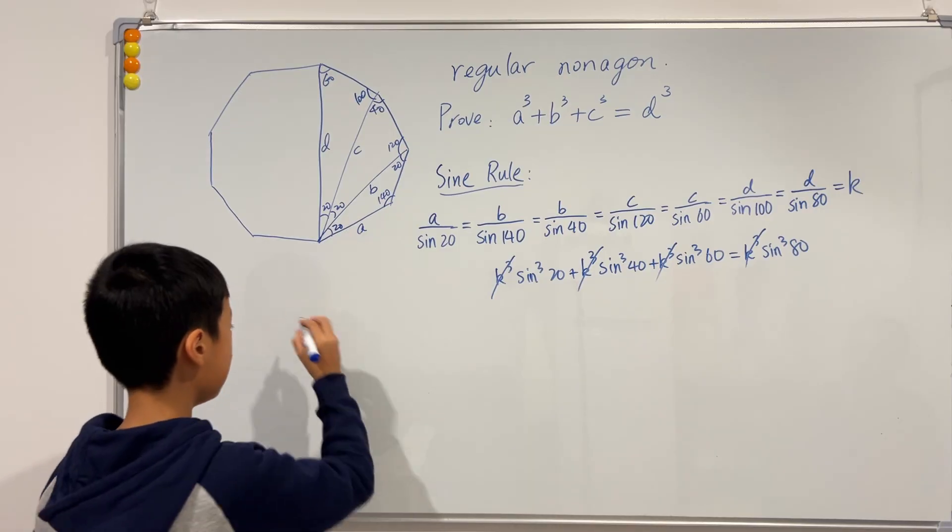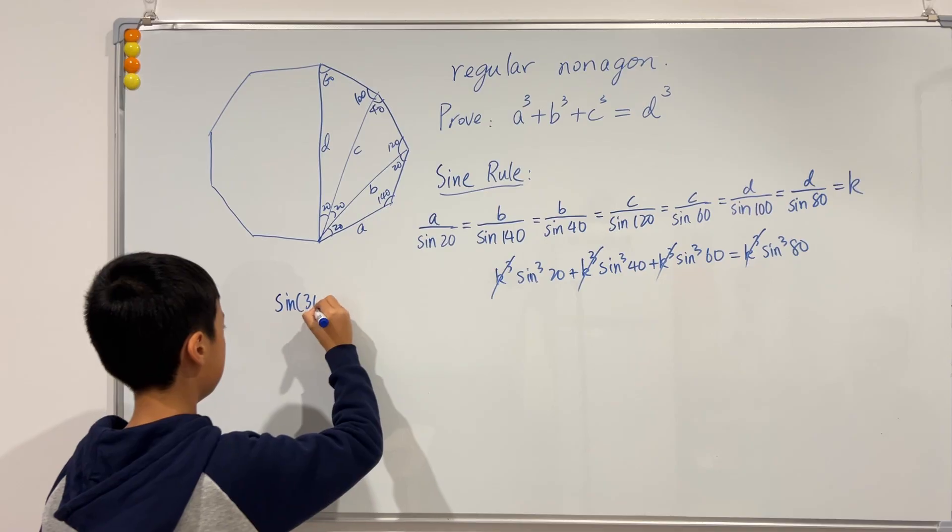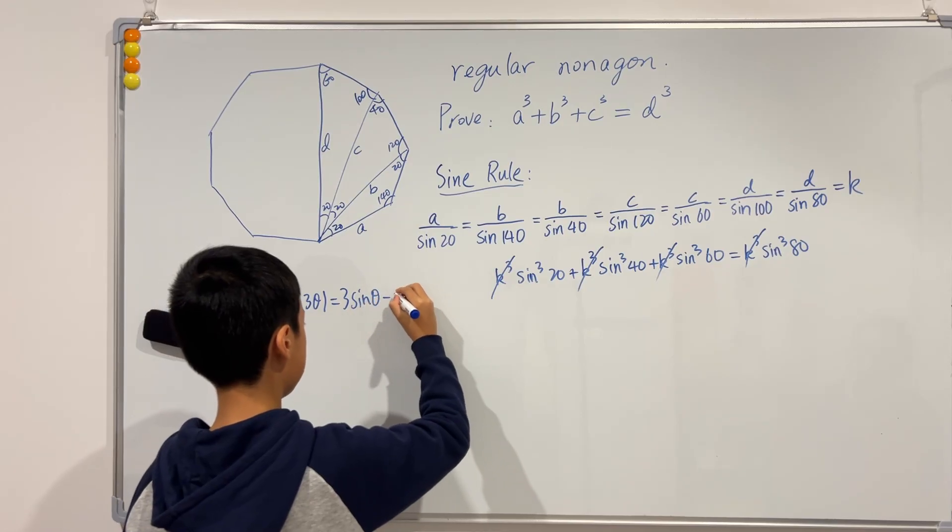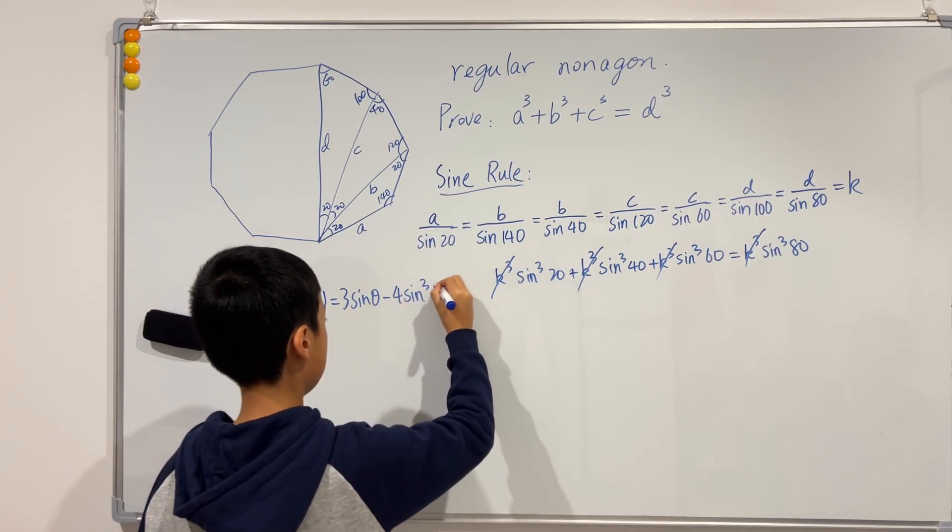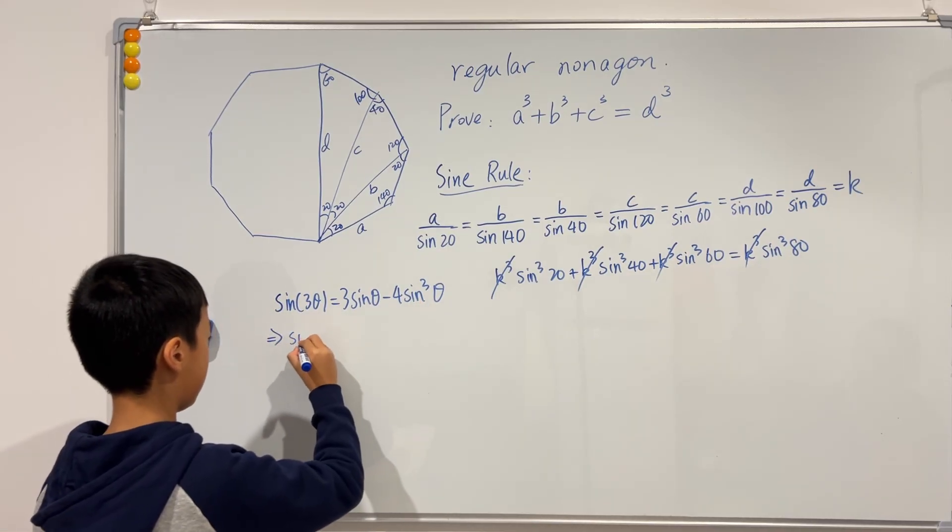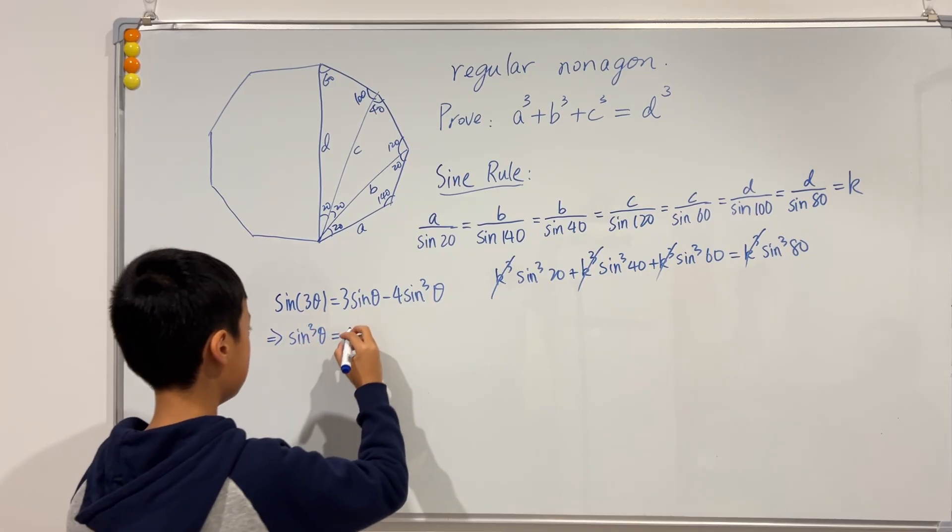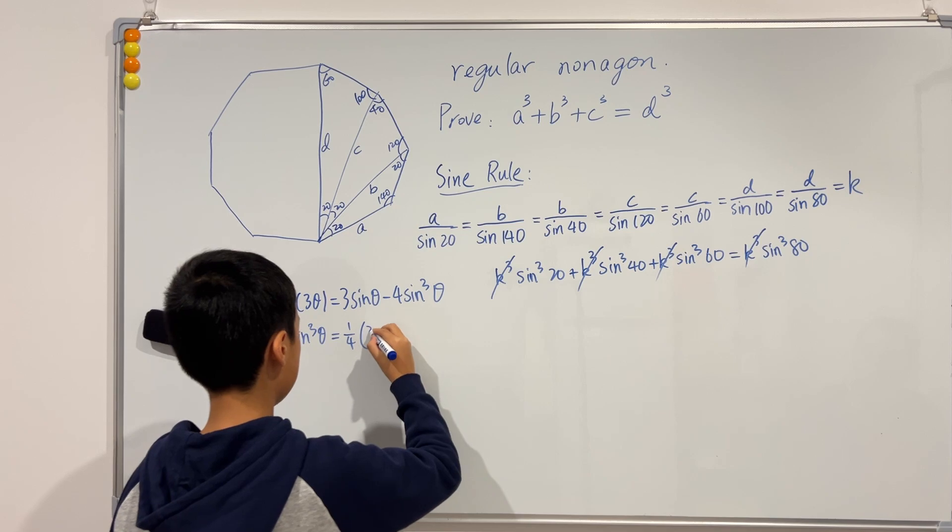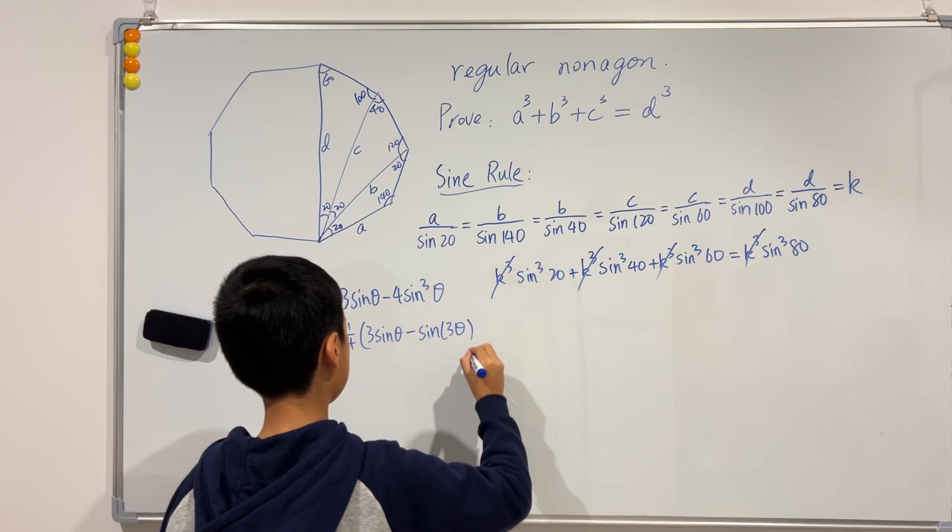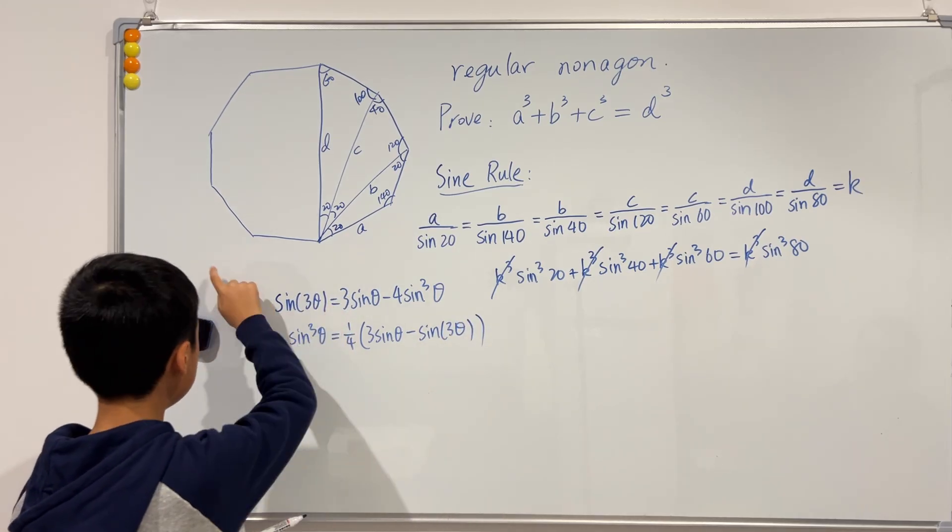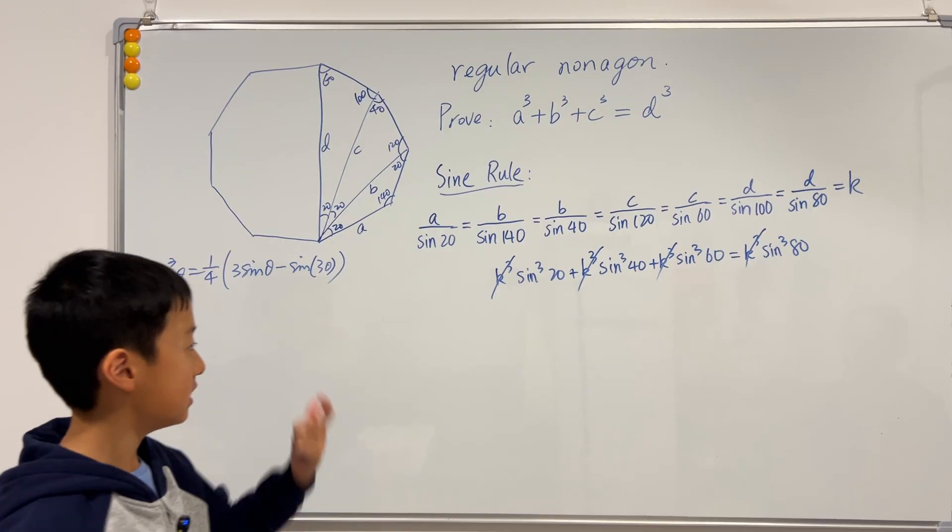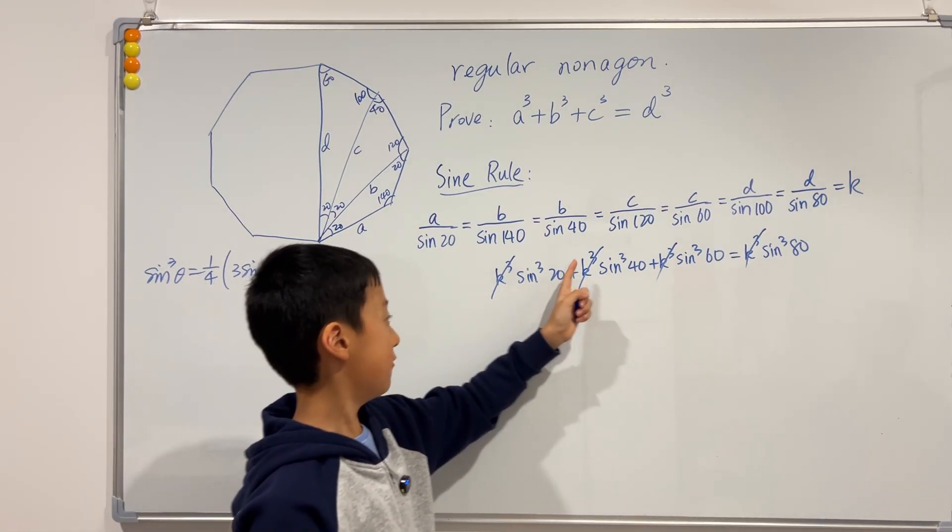So triple angle formula is sine of 3 theta, and this is equal to 3 times sine of theta minus 4 sine cubed of theta. Now we have a sine cubed of theta, so we can express this sine cubed of theta.